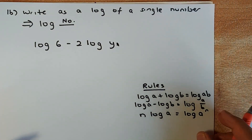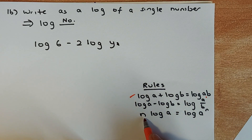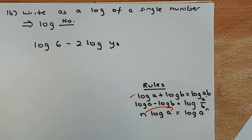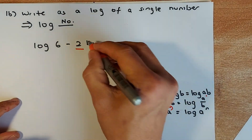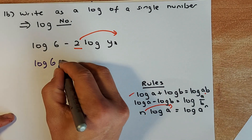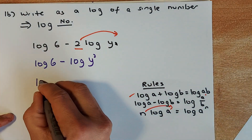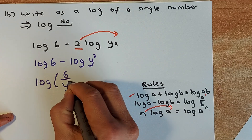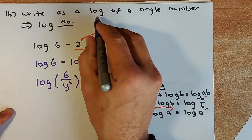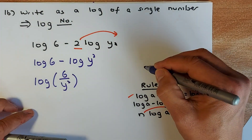The next one is simpler still. You need to know the three log rules: if you add logs you multiply, if you subtract logs you divide, and a coefficient n can be brought up as a power. In this case, the 2 can be brought up as a power, so the equation becomes log 6 minus log y squared. Because this is a minus, you use the division rule: it becomes log(6 over y squared). When they ask you to write as a log of a single number, that is your answer — a simple achieve.